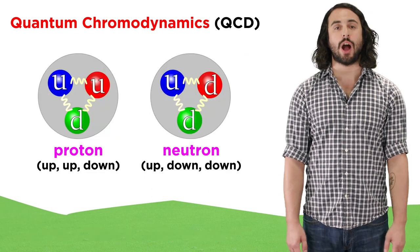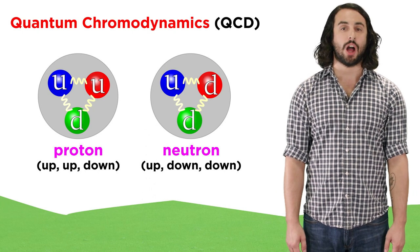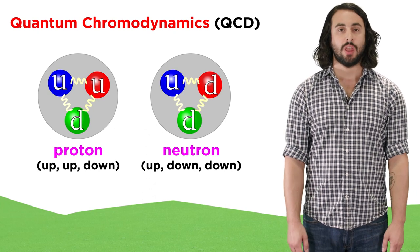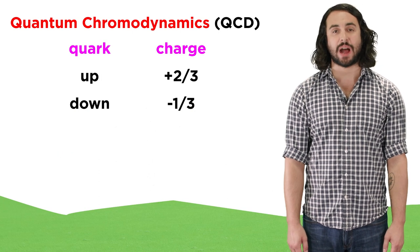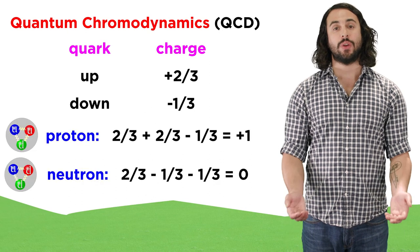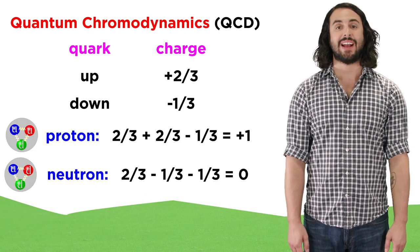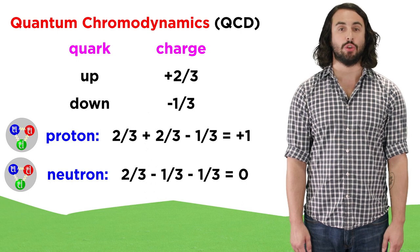Protons are made of two up quarks and one down quark, while neutrons are made of one up quark and two down quarks. Up quarks have a two-thirds positive charge, and down quarks have a one-third negative charge. So doing the math, we can see how we arrive at plus one and zero as the charges on the proton and neutron.